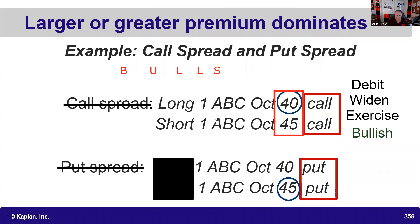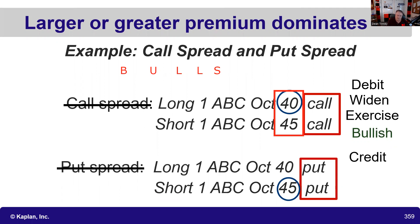For the put spread reveal: the 45 put is dominant — higher strike put contracts always have greater premiums. So if that's the one I bought, it's a debit put spread and it's bearish. If it's the one I sold, it's a credit put spread and it's bullish. I brought in more for the 45 than I paid out for the 40. Worst case, somebody puts it to me at 45 and I put it to the next guy at 40. What I'm hoping is the contracts expire, the difference in premiums narrows, and I am bullish.